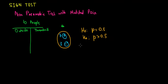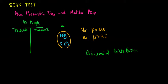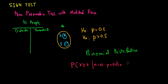The binomial distribution tells us what is the probability of observing at least seven positive differences by chance. Looking in the binomial distribution table, we calculate the probability that our positive differences are at least seven, given a sample of ten observations and a proportion of 0.5. This gives us the probability that our positive differences happened by chance.